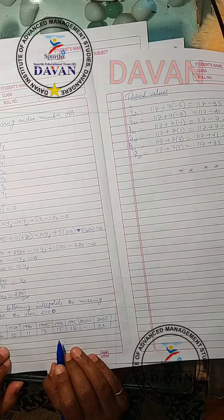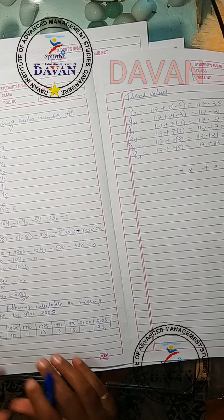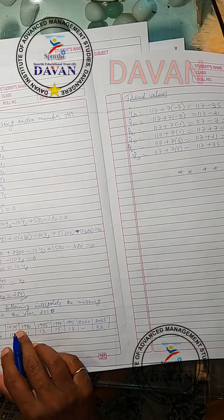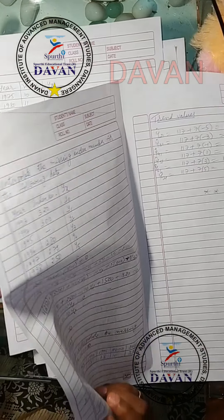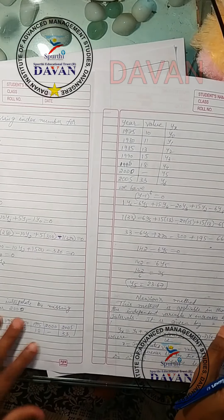Similarly, y equals n. In this way, we find the values for y1, y2, y3, y4, y5, y6. Substitute the values into this equation to get the corresponding values.